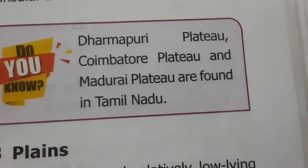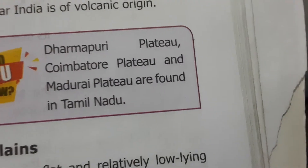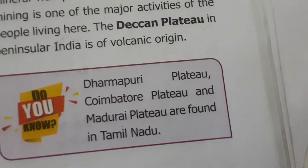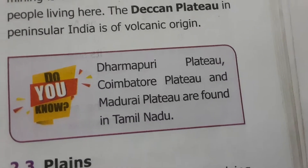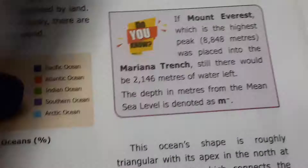Dharmapuri Plateau, Coimbatore Plateau, and Madurai Plateau are found in Tamil Nadu. Tamil Nadu has only three plateaus: Dharmapuri, Coimbatore, and Madurai.